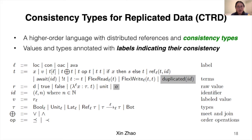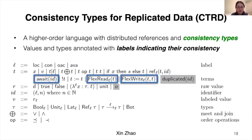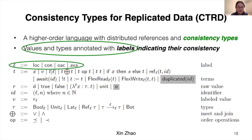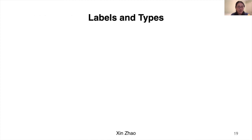Here is the formal syntax of the language, which is a higher-order language with distributed references and consistency types. The ML-style reference additionally contains a user-defined identifier to support multiple clients accessing. The language also contains additional terms such as await, flex-read, and flex-write; runtime-generated terms such as duplicated and abstract location o; and lattice values and types for supporting commutative operations. Values and types are annotated with labels as described before, and the labels on types relate to subtyping.